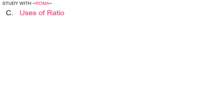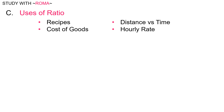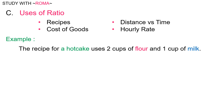Uses of ratio. Ratio can be used in recipes, cost of goods, distance versus time, hourly rate, and many more. For example, the recipe for a hot cake uses two cups of flour and one cup of milk. The ratio of flour to milk is two is to one.